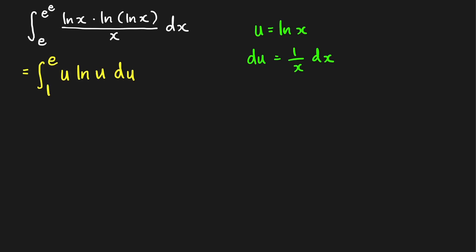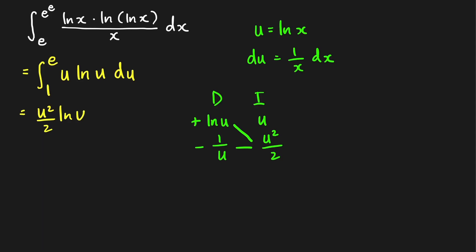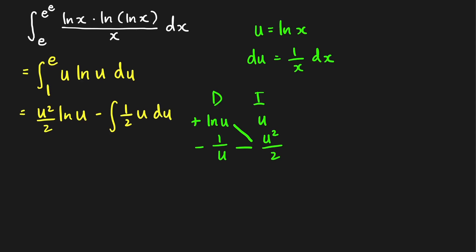We evaluate ∫u·ln(u) du using integration by parts with the tabular (DI) method. We differentiate ln(u) to get 1/u, and integrate u to get u²/2. Applying integration by parts: (u²/2)·ln(u) minus the integral of (1/u)·(u²/2) du, which simplifies to minus the integral of (1/2)u du. This is a definite integral from 1 to e.